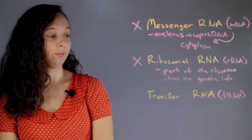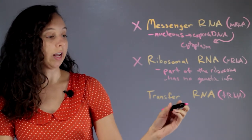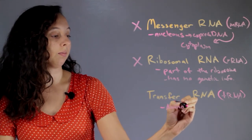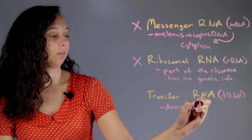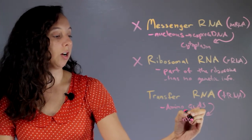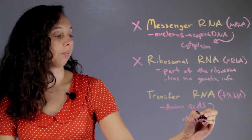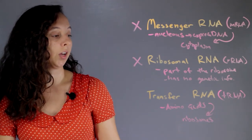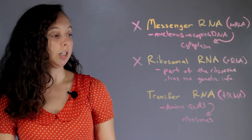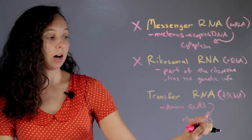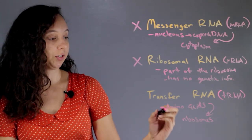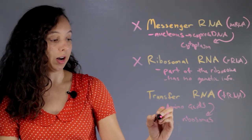And what does this do? Well, transfer RNA takes amino acids and it transports them to ribosomes. So remember, amino acids are the building blocks of protein. So the tRNA helps get those building blocks to the ribosome so they're all going to get put together. And amino acids certainly count as genetic information.